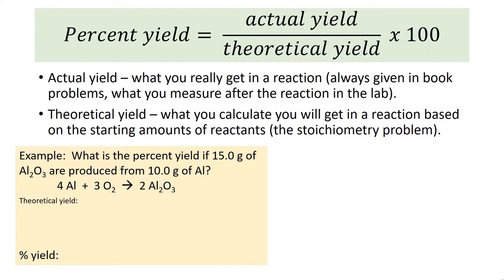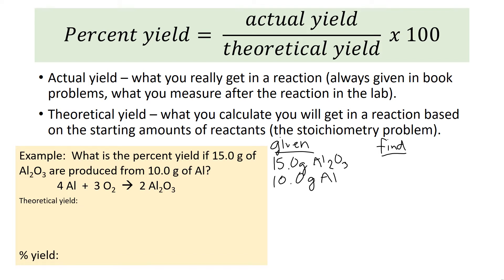Let's try a problem. What is the percent yield if 15.0 grams of aluminum oxide are produced from 10 grams of aluminum? This has a lot of information, so let's do a given and a find. We're given 15.0 grams of aluminum oxide and 10.0 grams of aluminum, and we're trying to find percent yield.